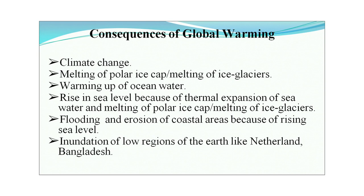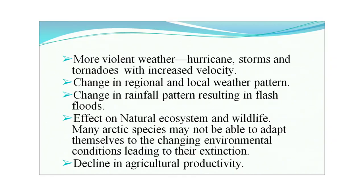Consequences of global warming include: climate change; melting of polar ice caps and glaciers; warming of ocean water; rise in sea level due to thermal expansion of sea water and melting of polar ice caps; flooding and erosion of coastal areas; inundation of low-lying regions like the Netherlands and Bangladesh; more violent weather conditions such as hurricanes, storms, and tornadoes; changes in regional and local weather patterns; changes in rainfall patterns; effects on natural ecosystems and wildlife; many arctic species may not be able to adapt and will perish; and decline in agricultural production.